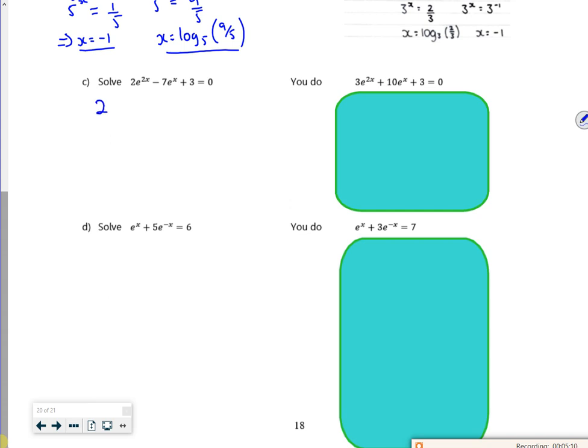Because that's just like 2 e to the x squared minus 7 e to the x plus 3 is 0. So if you put it into poly, you get out a half and 3. So e to the x is a half, e to the x is 3. So x is ln of a half, x is ln of 3. That's actually easier than the ones before, isn't it?